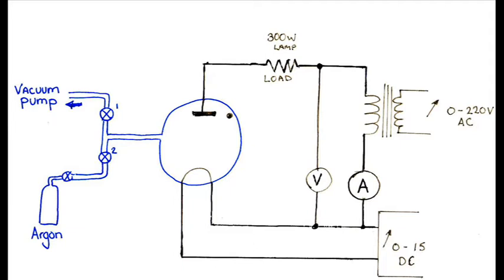This diagram shows the test circuit along with the 300 watt lamp load. It also shows that we first evacuate the rectifier and then add some argon to it.